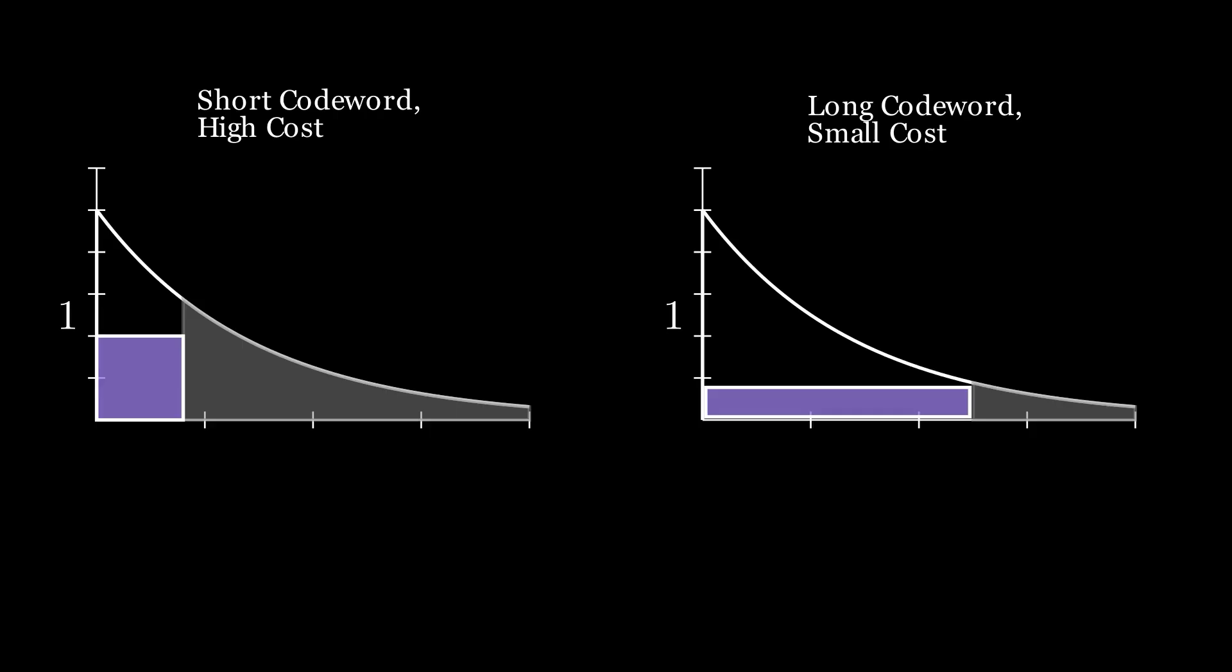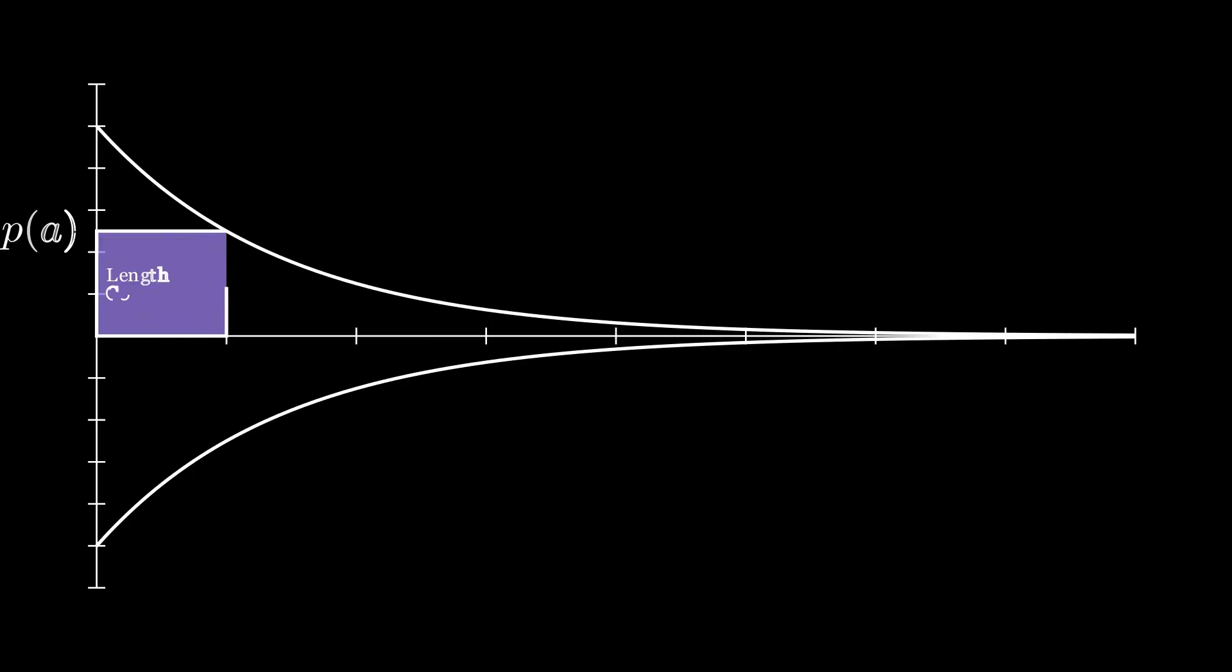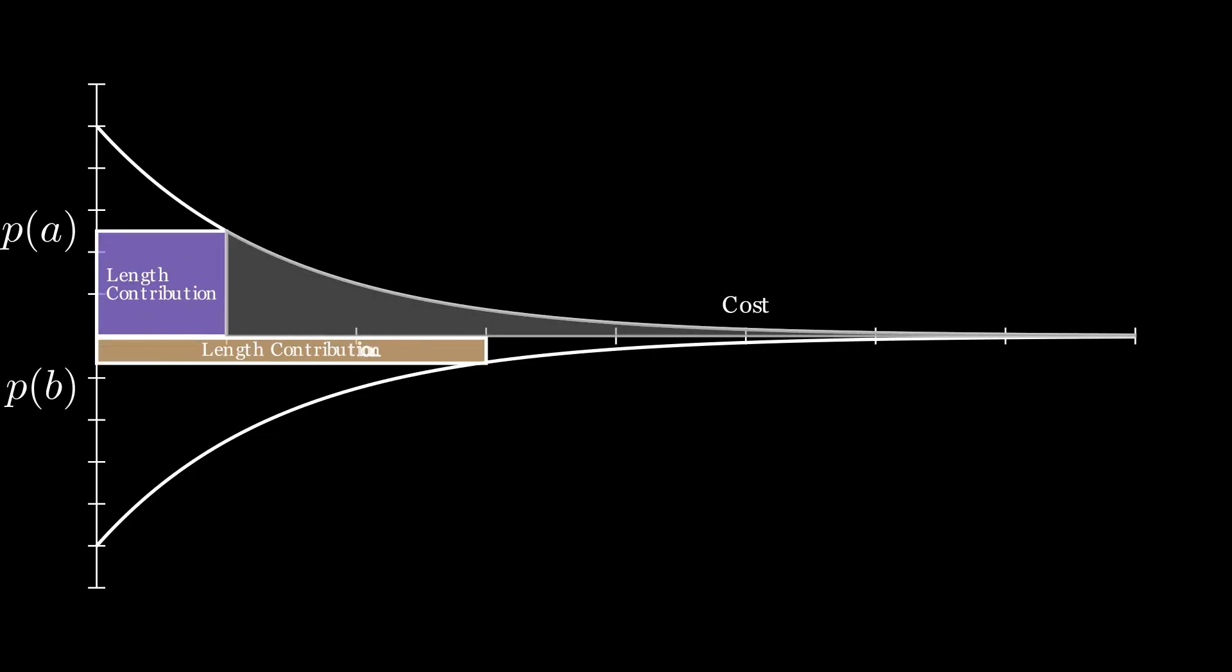Now, how do we find the optimum cost? Well, for sequences that occur half the time, we can give half of the budget. For those that occur a quarter of the time, we can give one-fourth the budget and so on. The proof of why this is the most optimum solution is in the description box below. If you have liked the video so far, consider subscribing. It helps a lot.